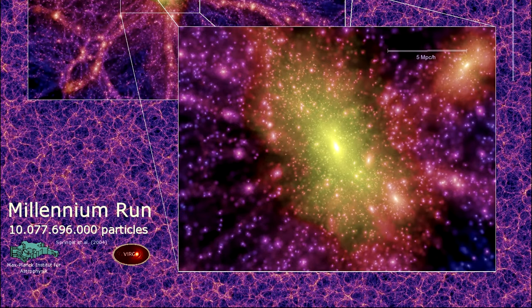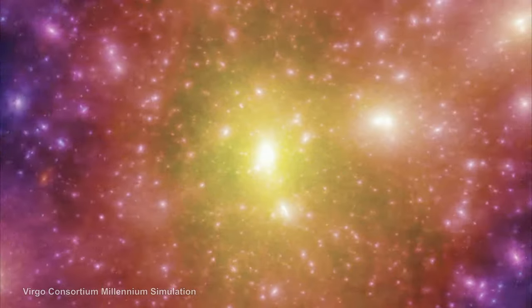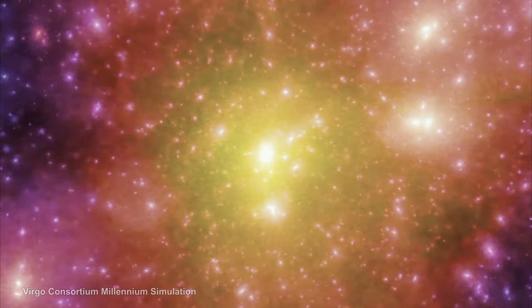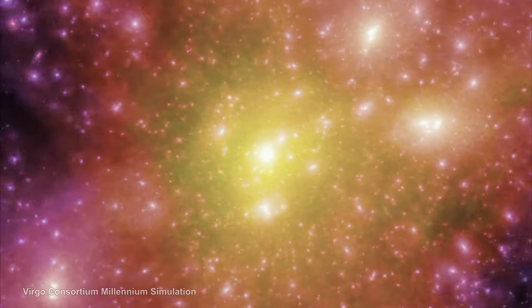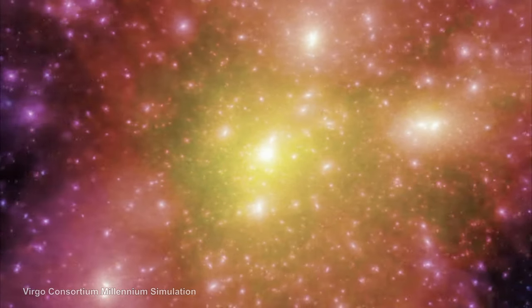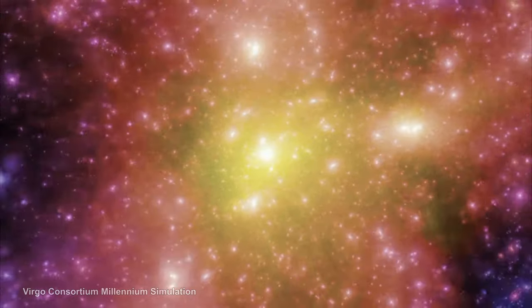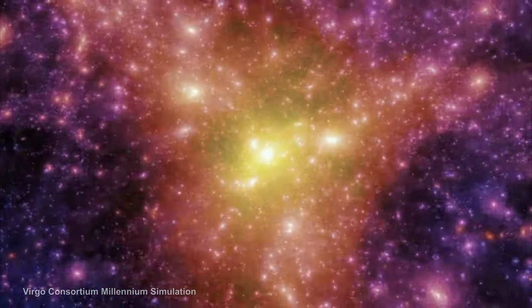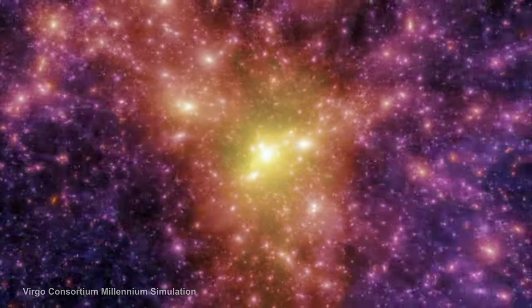Working with the Virgo Consortium of scientists from the Max Planck Institute in Germany, the survey put every data point into a supercomputer and produced the largest 3D image ever created. Here we are zooming into and panning across that image. You cannot see individual galaxies or even galaxy clusters — what we see are superclusters linked together in filaments or walls in a gigantic cosmic web.